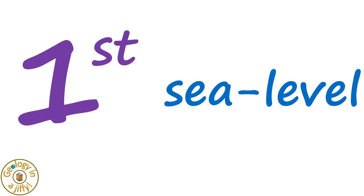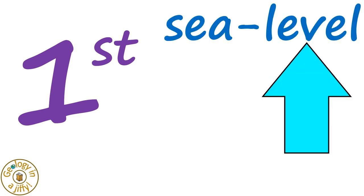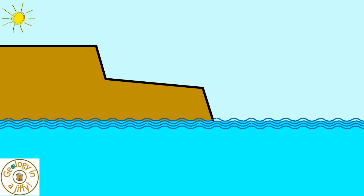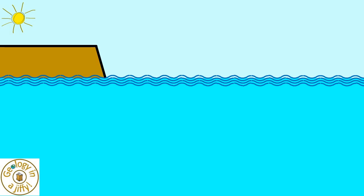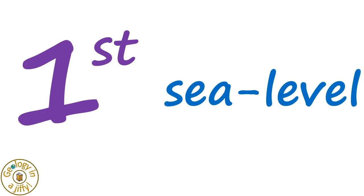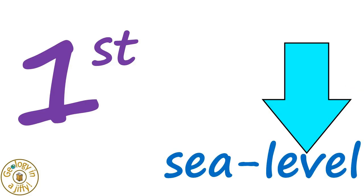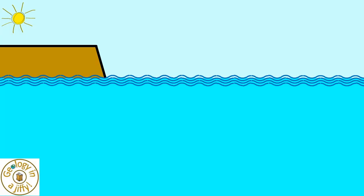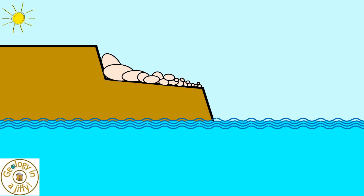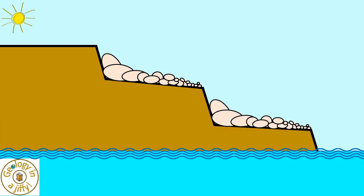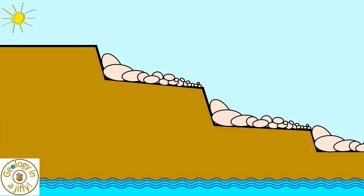Raised beaches are generally formed in two ways. The first is due to sea level changes, which can rise upwards as the sea gradually does, rising up against the coastal area. The sea level can also drop downwards, leaving raised beaches on terraces that mark every phase of falling sea level.